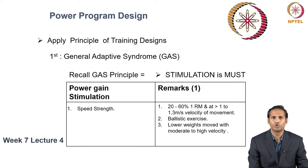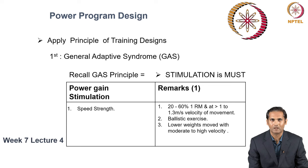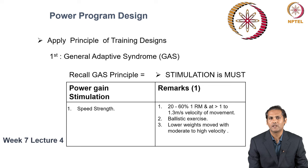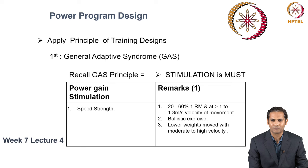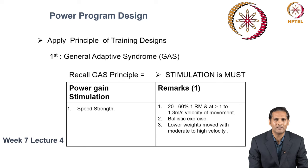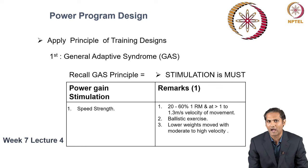Speed strength is characterized by an intensity of 20–60% of 1RM, which is moved at a velocity greater than 1 to 1.3 meters per second. Most ballistic exercises can be considered as speed strength stimulation. Speed strength stimulation is characterized by low weights moved at moderate to high velocity.